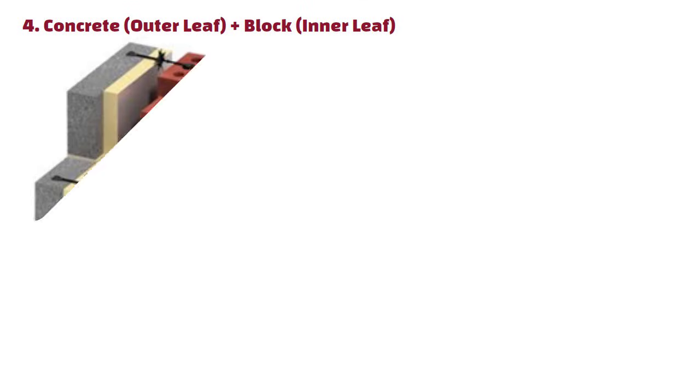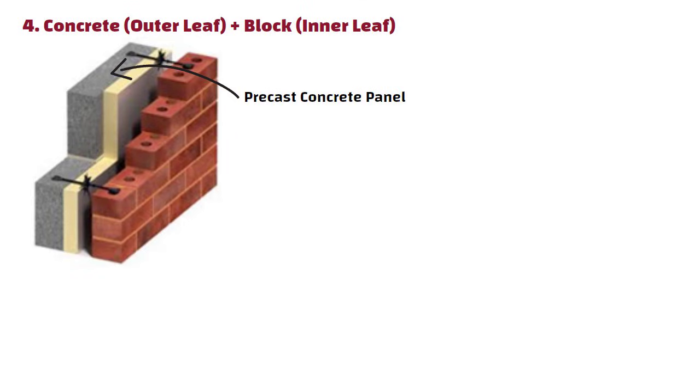Concrete plus block: Precast concrete panels or cast-in-place concrete can be used for the outer leaf in modern industrial designs, offering excellent weather resistance.